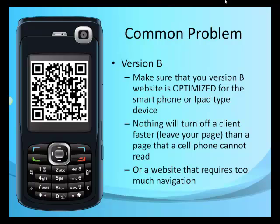A common problem — and this was shown to me by my buddy Carl White — is that a lot of companies and professionals are not making sure that Version B is a mobile-optimized website, and that's extremely important. It's got to be optimized for the smartphone, iPad, or tablet. Nothing will turn off a client faster or cause them to leave your page — what we call bounce rate — than a page that a cell phone can't read, or a website that requires too much navigation to get around.